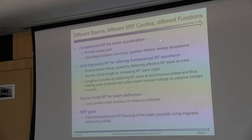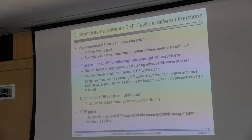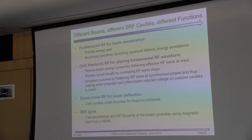The main function of these cavities is to accelerate the beam and provide energy gain, but there are other applications. For example, third-harmonic cavities — operating at three times the fundamental frequency — are used to change bunch length or modify energy spread along the bunch, which is important for bunch compression. Then there are transverse cavities that kick the beam sideways — used in colliders as crab cavities to increase luminosity. And a completely different application: SRF guns, where photocathodes are placed inside an SRF cavity.